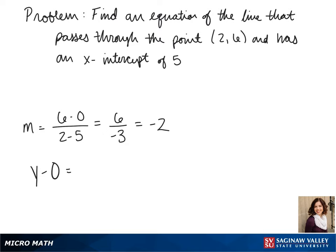To find our equation, we can put it into point-slope form. This gives us y minus 0 equals negative 2 times x minus 5.